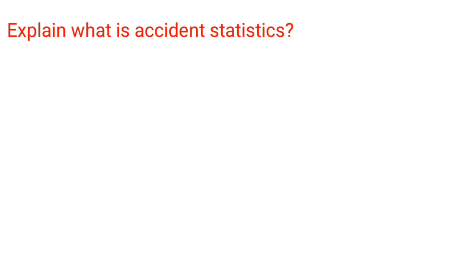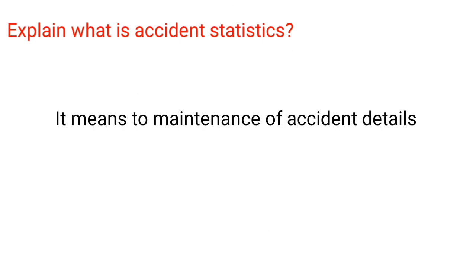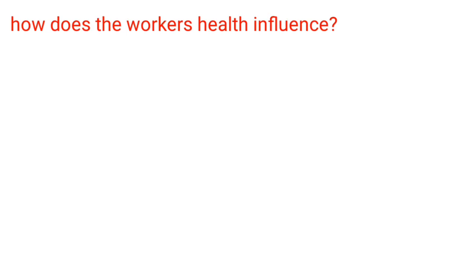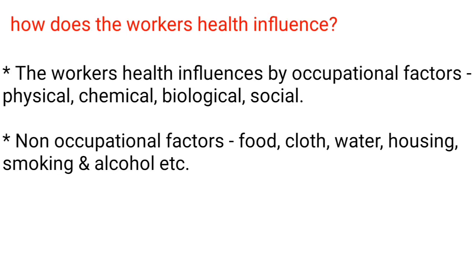What is accident statistics? It means the maintenance of accident details. How does the worker's health get influenced? A worker's health is influenced by occupational factors (physical, chemical, biological, social) and non-occupational factors (food, clothing, water, housing, smoking, and alcohol).